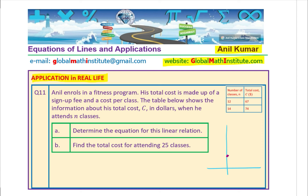The question is: Anil enrolls in a fitness program. His total cost is made up of a sign-up fee and a cost per class. The table below shows information about his total cost C in dollars when he attends N classes. When the number of classes is 12, the cost is $67, and when the number of classes is 14, the cost is $74.